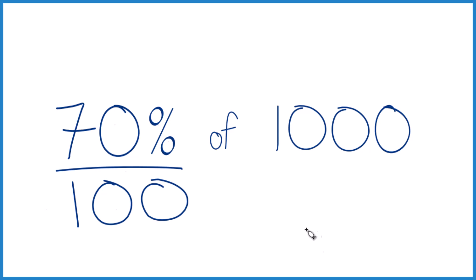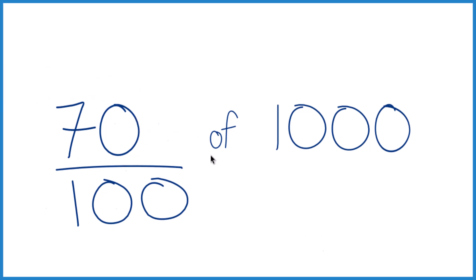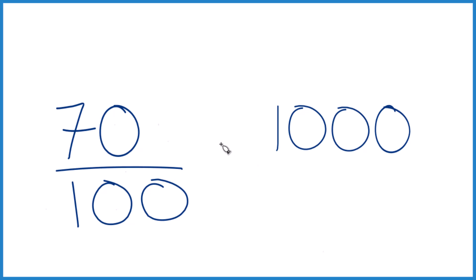Here's another way to do it. 70%, that's 70 over 100, and of, we're just going to have multiplication there.